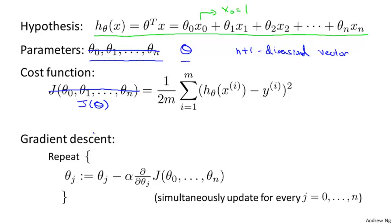Here's what gradient descent looks like. We're going to repeatedly update each parameter theta j according to theta j minus alpha times this derivative term. Let me write this as j of theta. So theta j is updated as theta j minus the learning rate alpha times the partial derivative of the cost function with respect to the parameter theta j. Let's see what this looks like when we implement gradient descent, and in particular, let's see what that partial derivative term looks like.